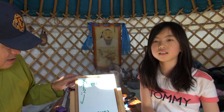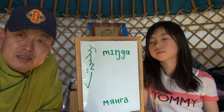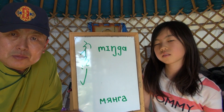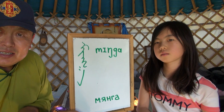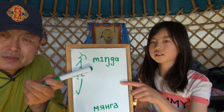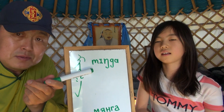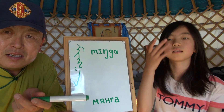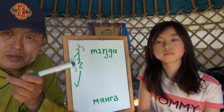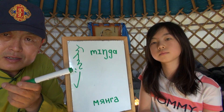The number 1,000 in Mongolian is Mi-N-Ga. In spoken, it's Miang. So you can see here the International Phonetic Alphabet — this is for the reading, so you know how to pronounce it. Here is the Cyrillic. Here is the traditional Mongolian script: Mi-N-Ga, Miang.